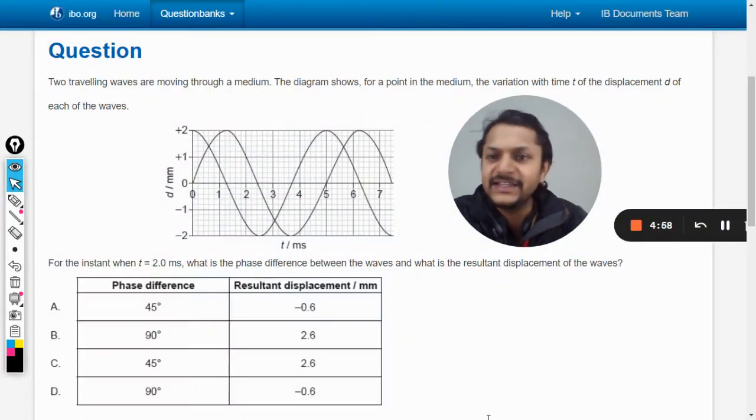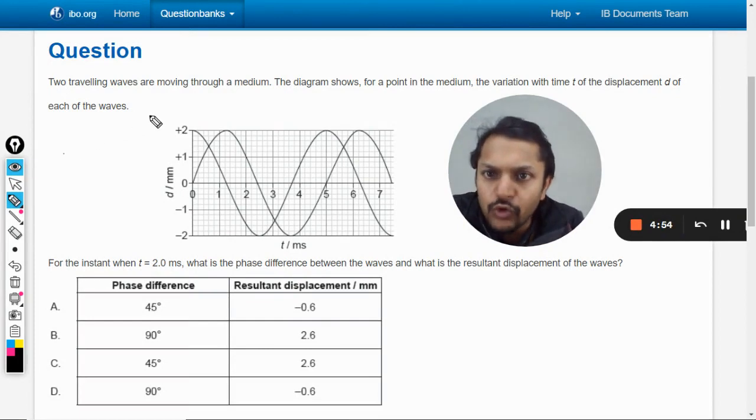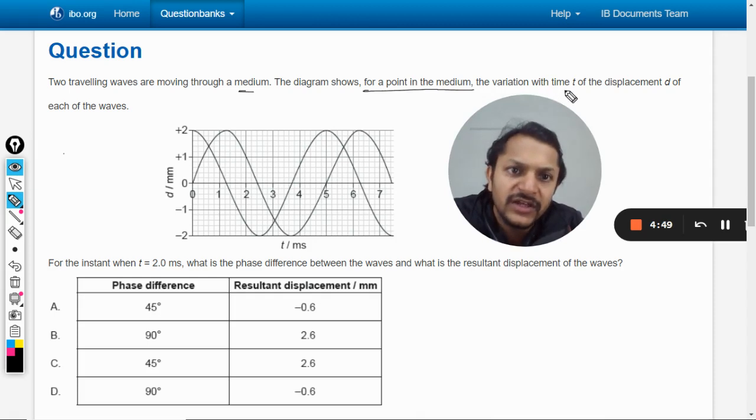Okay dear students, let us see how we are going to do this question. Two traveling waves are moving through a medium. The diagram shows, for a point in the medium, the variation with time t of the displacement d of each of the waves.